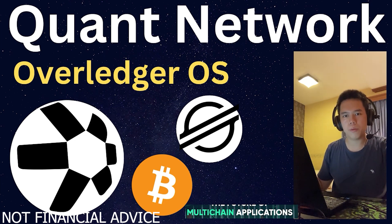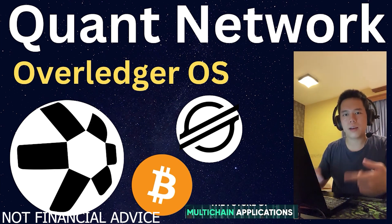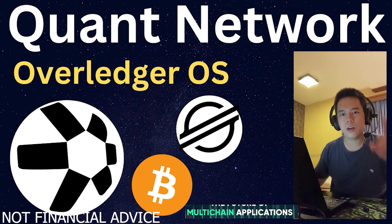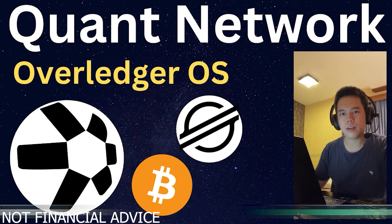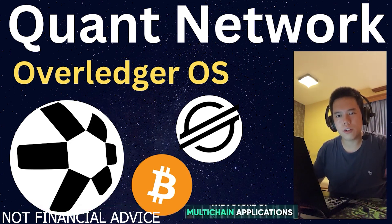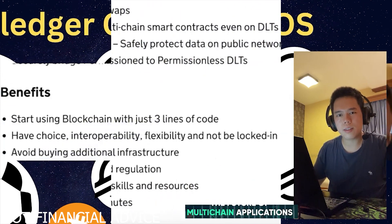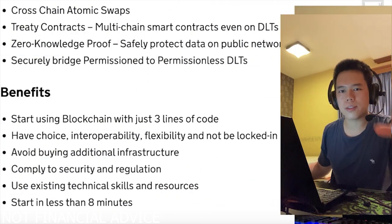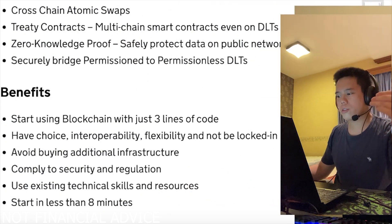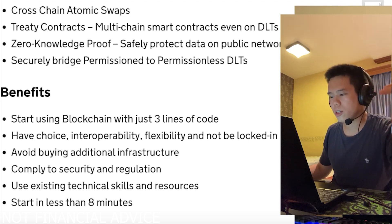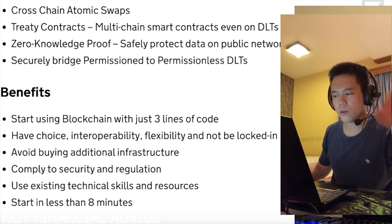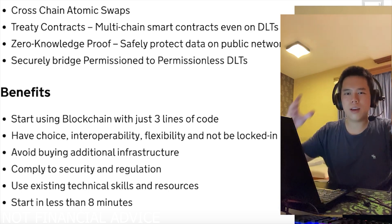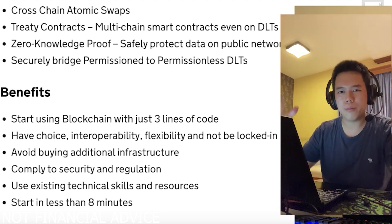There are multiple blockchains. With the Overledger OS, people don't have to be stuck building an application on just a singular blockchain. That is just how special the Overledger OS is. Individuals and institutions can start using blockchain with just three lines of code. It's so simple — it's essentially a plug-and-play deal.